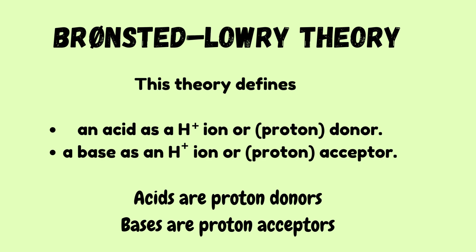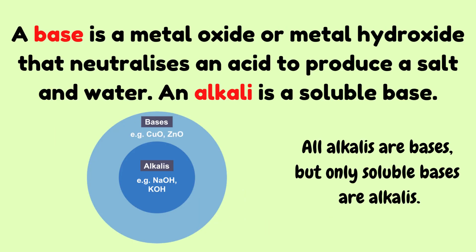Brønsted-Lowry theory defines an acid as a proton donor and a base as a proton acceptor. A base is a metal oxide or metal hydroxide that neutralizes an acid to produce a salt and water. An alkali is a soluble base. All alkalies are bases, but only soluble bases are called alkalies.